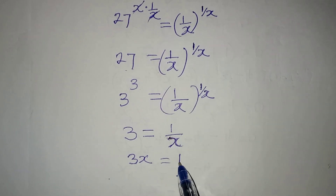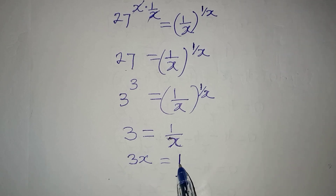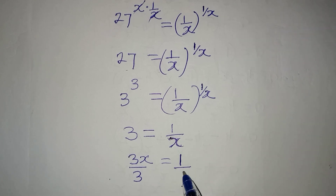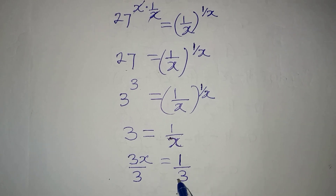From here we can cross multiply, so that 3x will be equal to 1. Then we can divide by 3 so that x will be alone.